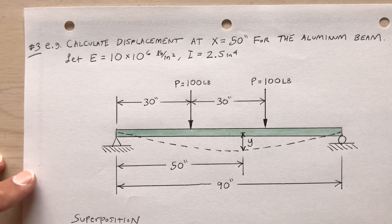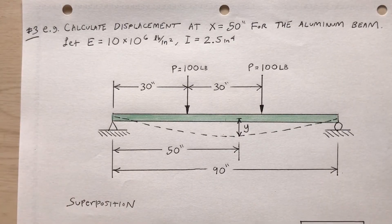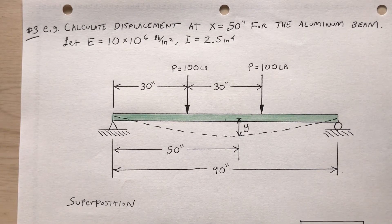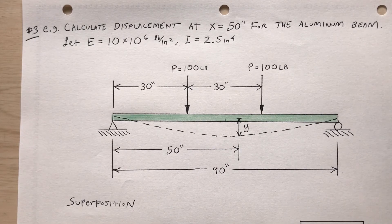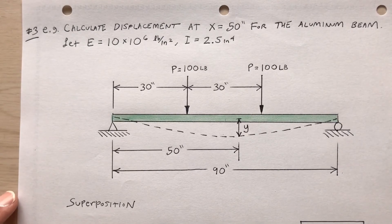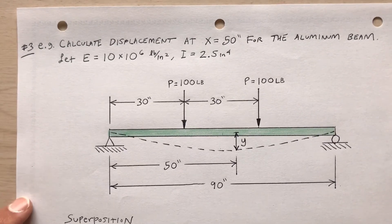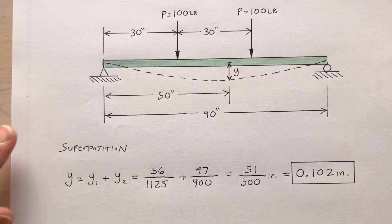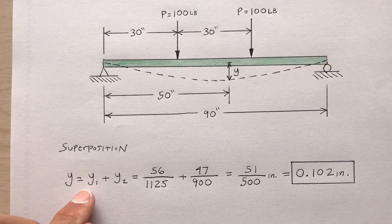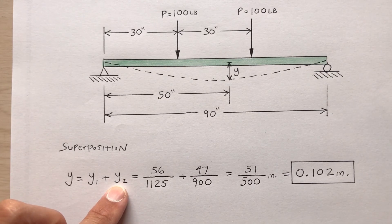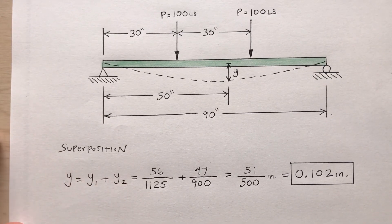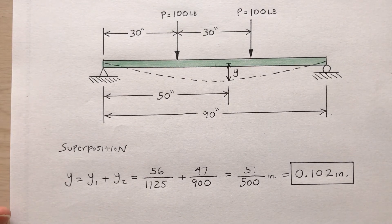The principle of superposition states that displacement due to more than one force acting simultaneously equals the sum of the displacements from each force acting individually. Adding the results from Examples 1 and 2, y equals y-sub-1 plus y-sub-2, gives a total displacement of approximately 0.102 inches at x equals 50 inches.